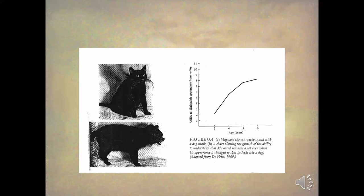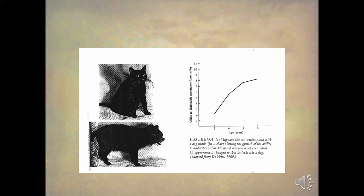And that's it for threats to internal validity. Here is Maynard the cat — a lab cat that was so mellow they could put a dog mask on him. This is a developmental study to see exactly when children develop the ability to recognize that when your external characteristics change, your internal characteristics may stay the same. They asked the kids whether Maynard would bark or meow, and they found that between the ages of three and six, children developed the ability to recognize that internal states don't change when you change external appearances. This is why little kids freak out when daddy puts on a Santa mask. Okay, have a good day. Bye-bye.